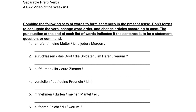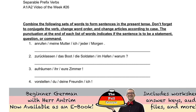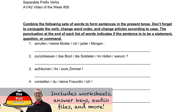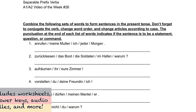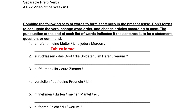Now that we have some of those words out of the way, we can start writing some sentences and practice the rules. In the first one, we have the verb anrufen. We're going to conjugate rufen and put an at the end of the sentence. There are two different ways to write this: either meine Mutter as the subject with ich as the object — mich — or ich as the subject and meine Mutter as the object. Meine Mutter ruft mich jeden Morgen an — my mother calls me every morning. Or: Ich rufe meine Mutter jeden Morgen an — I call my mother every morning.